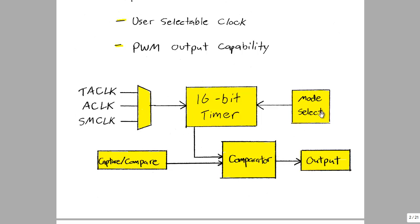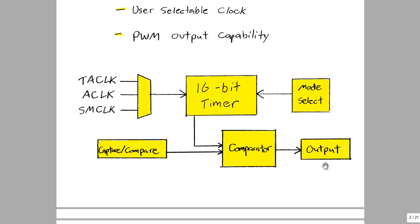On the right is the mode select. This will select either up mode or up-down mode. And finally, on the bottom here is the comparison blocks. So the capture compare register will store a 16-bit hexadecimal value. It'll compare that to the value that the timer is currently on, and then it'll generate an output. So this is used to generate the pulse width modulation outputs that we'll use to drive the LED banks in the color organ.